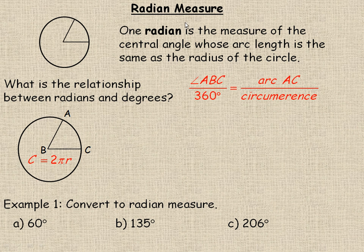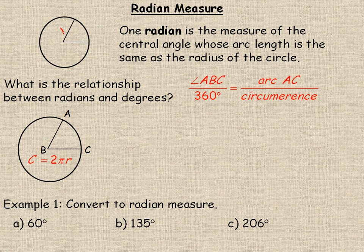In this lesson we'll take a look at the concept of radians. A radian is another way to measure an angle aside from measuring them in degrees. The definition says that one radian is the measure of the central angle — meaning the vertex is at the center of the circle — whose arc length is the same as the radius of the circle. So in the diagram, if this is a radius and this is a radius, then the arc length out here is exactly the same amount.